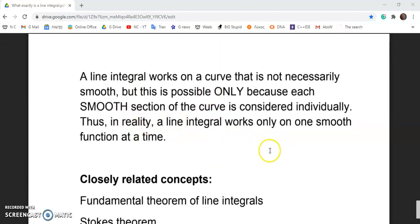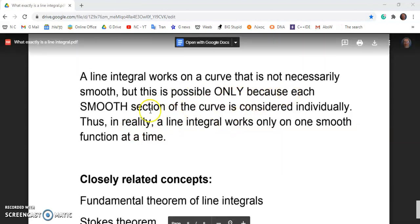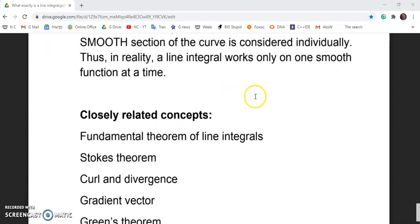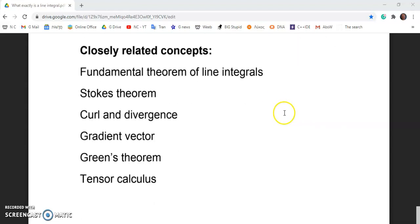So a line integral works on a curve that is not necessarily smooth, but this is possible only because each smooth section of the curve is considered individually. So in reality, a line integral works only on one smooth function at a time. And mainstream academics hate me for this. Actually, they hate everything I say because I expose their ignorance.